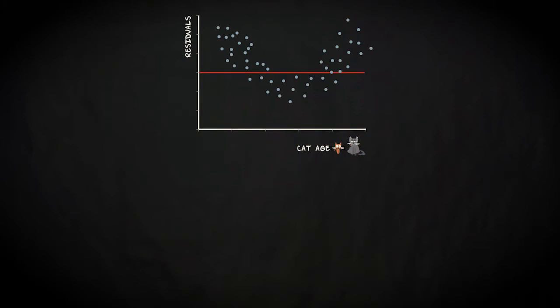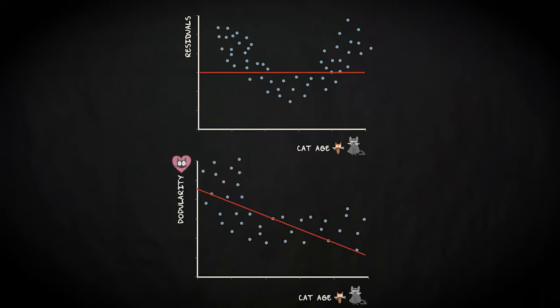If you see a pattern where the residuals are mostly positive for one range of x and mostly negative for another range, then the data are not linear. This could happen, for example, if video popularity doesn't decrease by much after a certain age, say for cats age 10 and older.